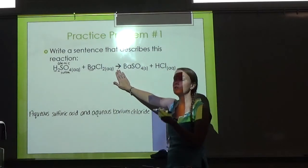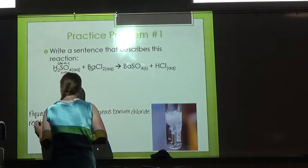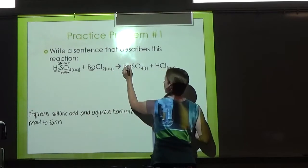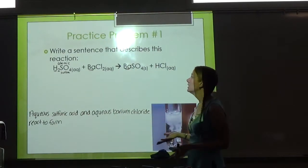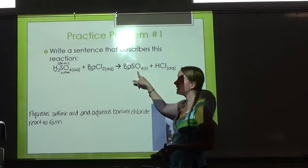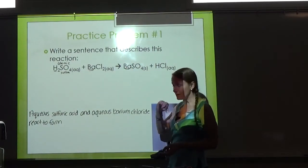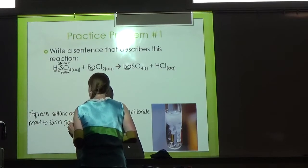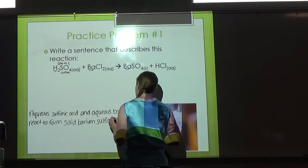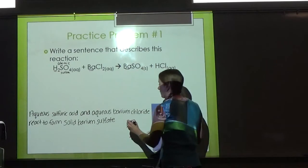We have our yield sign, so I'll put 'react to form.' Here I have barium again—still a regular metal. SO4 is a polyatomic ion, sulfate, so I'll call this barium sulfate, and it's a solid. So: 'react to form solid barium sulfate.' If the naming part is throwing you off, you need to go back to Chapter 9 videos.